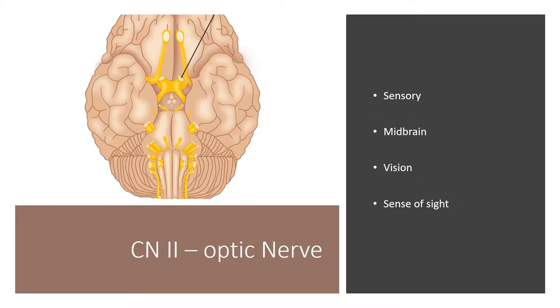Cranial nerve 2 is your optic nerve, involved in sensory systems. It is located in your midbrain and is involved in sight and vision.